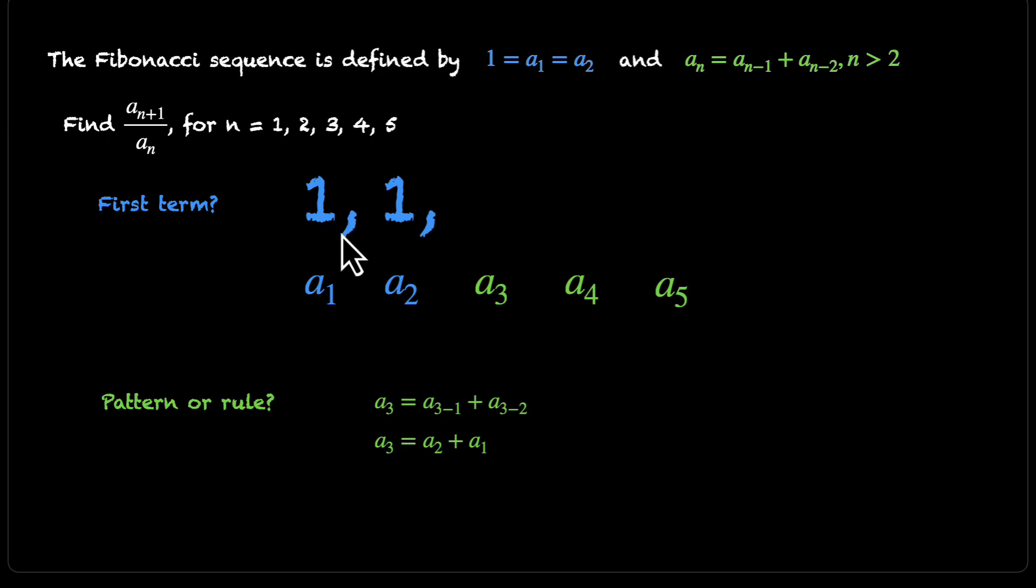We can use the values from here and say that a3 = 1 + 1. That means a3 = 2. We have our next term, a3. Now we can do the same thing again. We can put in n = 4. a4 = a3 + a2. This gives us a4 equals the third term plus the second term. So our fourth term equals this third term plus the second term, that's 2 + 1. a4 becomes 3.